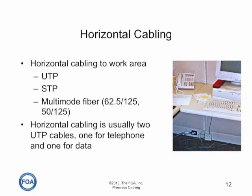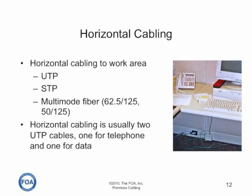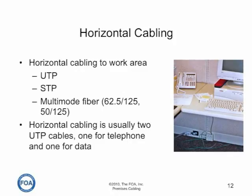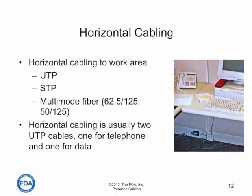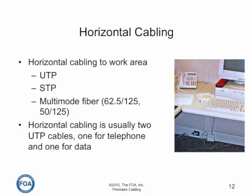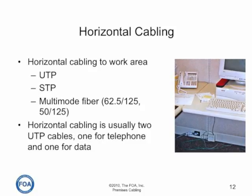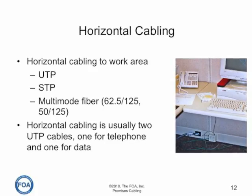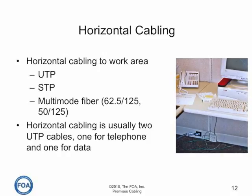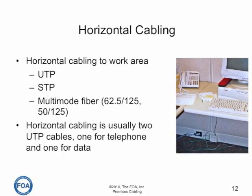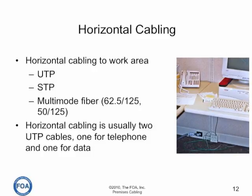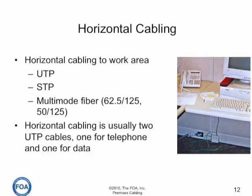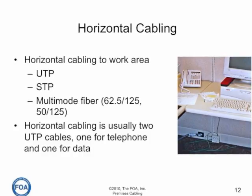Horizontal cabling is the cabling that connects the work area to the telecom closet, or in today's network, it also connects wireless access points back to the telecom closet. It can be UTP, or shielded or screened twisted pair, or multi-mode fiber. Although today it's usually unshielded twisted pair cables — one for telephone and at least one for data. With the advent of wireless networks, less and less workstations or work areas are being cabled with copper connections; more and more are simply relying on the wireless networks in the building.